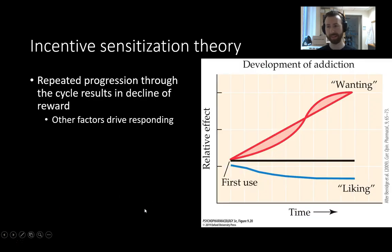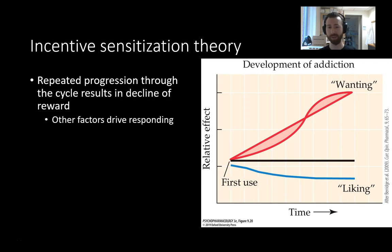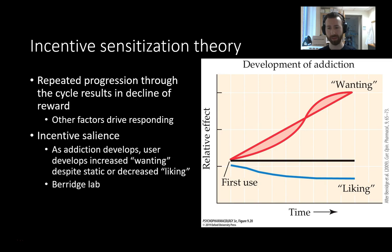So let's talk a little bit about incentive sensitization. As we talked about with the spiral of decline in the first mini lecture, repeated progression through the cycle results in decline of rewards. With repeated use of a drug and things like tolerance, drugs become less reinforcing. This might seem counterintuitive — you see a decrease in liking for a drug, but you see an increase in wanting it. Somebody deep in the cycle of addiction might get a lot less pleasure out of using a drug than someone completely naive to it, yet they want it much more — great wanting, but not very much liking.